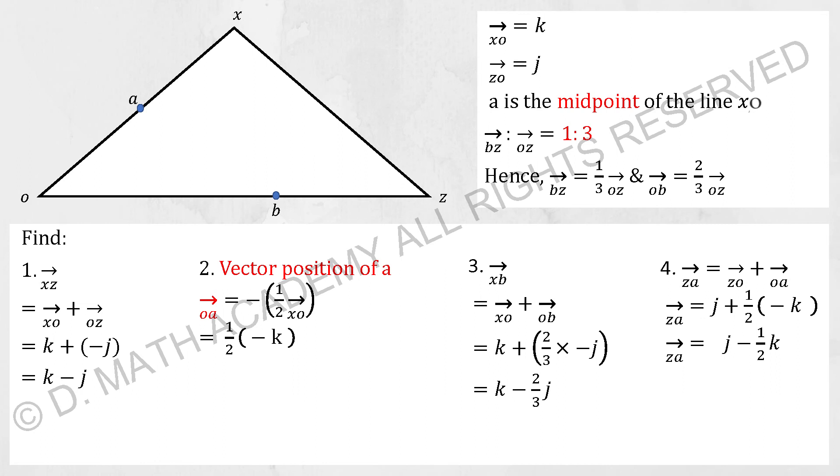XA will be half K, AO will be half K. However, they are referring to OA. Hence, you are required to add a negative into it. So your OA will be negative half K.